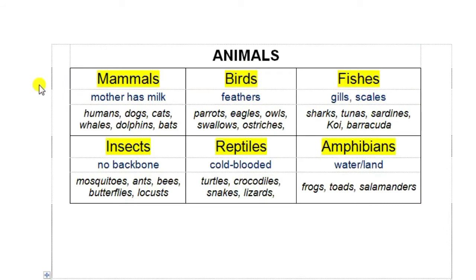We have to go back to nature to understand the following point: there are what I would call mega-families. They are very, very large, and within those families we would find smaller families. For example, there are two big families in nature — the animals and the plants. In the animal kingdom there are six very large families. Mammals: the gene of a mammal is that the mother has milk and the baby will drink from the mother.